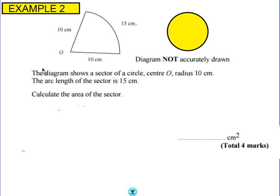So example two. The diagram shows a sector of a circle, centre O, radius 10 centimeters. The arc length of the sector is 15 centimeters. Calculate the area of the sector.